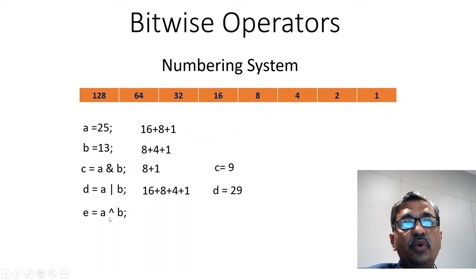And E is equal to A XOR B. We have to consider the numbers which are present only in one number. Like 16 is present only in A. So we consider 16. 8 is present in both, so we are not considering 8. 4 is present only in B. So we are considering 4. And 1 is present in both, so we are not considering 1. So it is 16 plus 4 is 20.